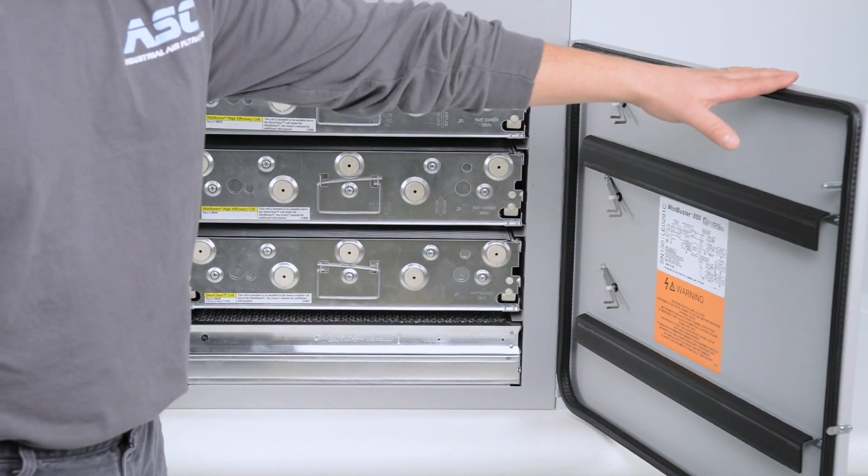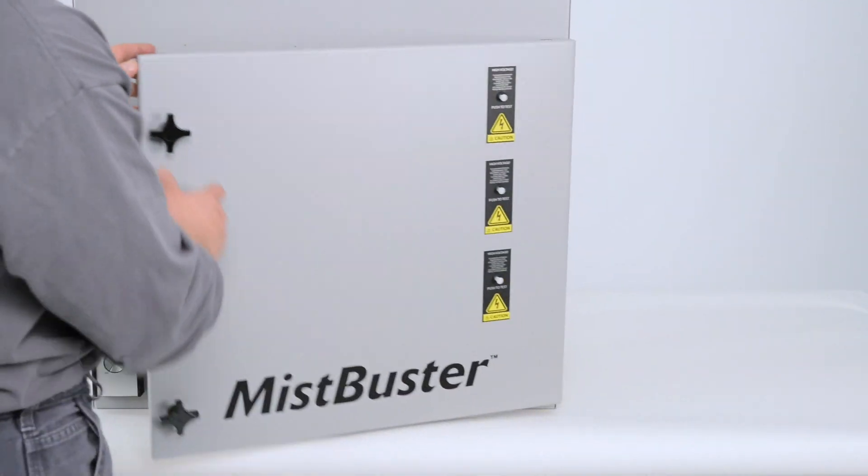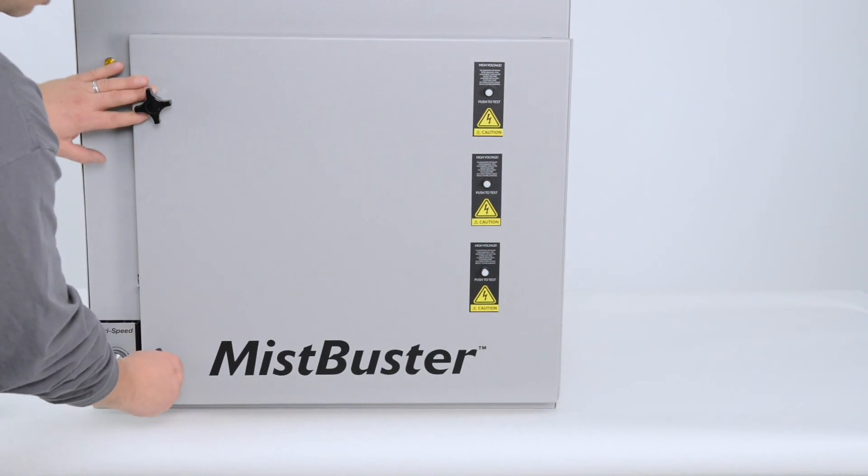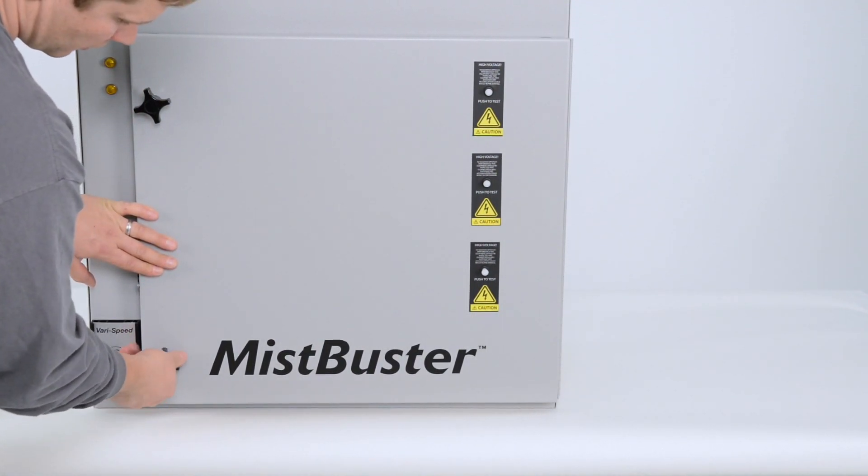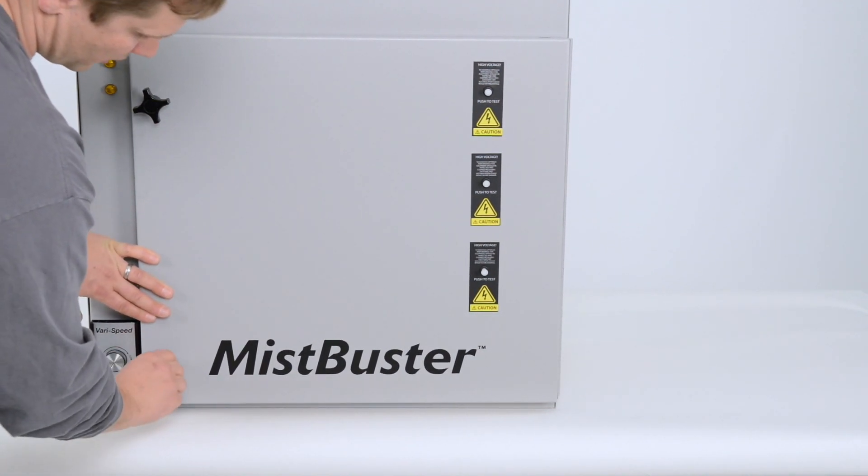Once the cells and the impingers are inserted, close the door and you will rotate the knobs clockwise and tighten them down.